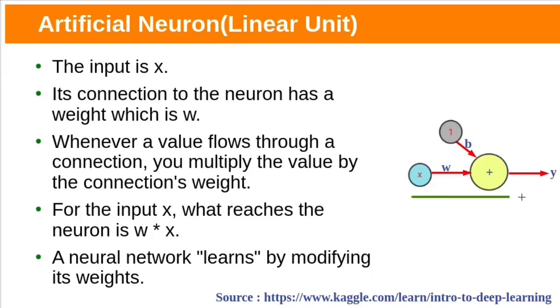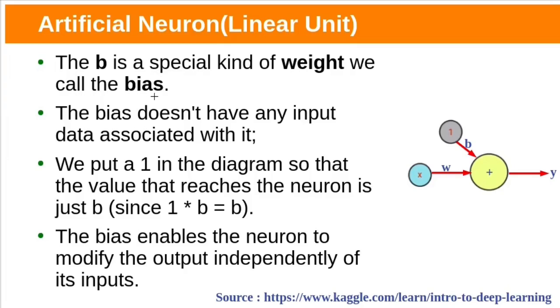Let's see the fundamental component of neural network, the single neuron. A neuron with one input looks like this. Here the input is x. Its connection to the neuron has a weight which is w. Whenever value flows through a connection it will be multiplied with the connection weight. The result will reach the neuron. Neural network learns by modifying its weights. B is a special kind of weight, we call this bias.